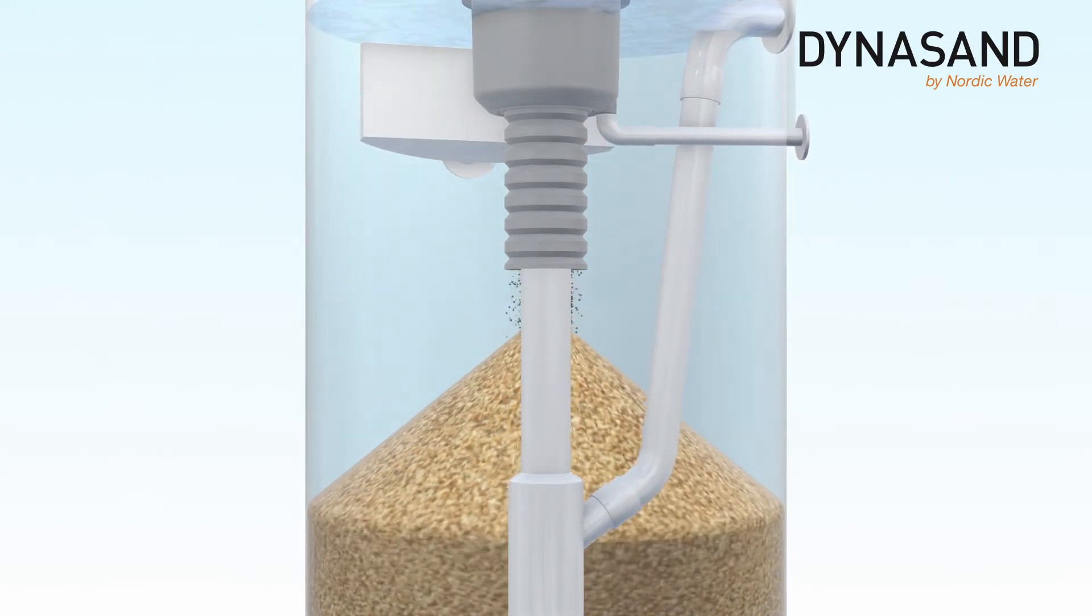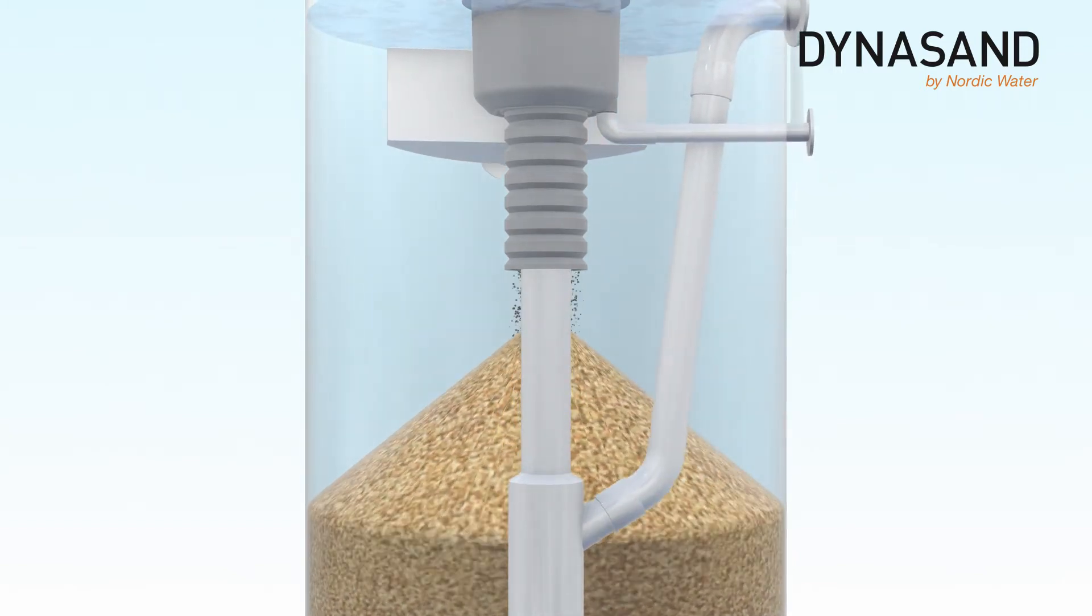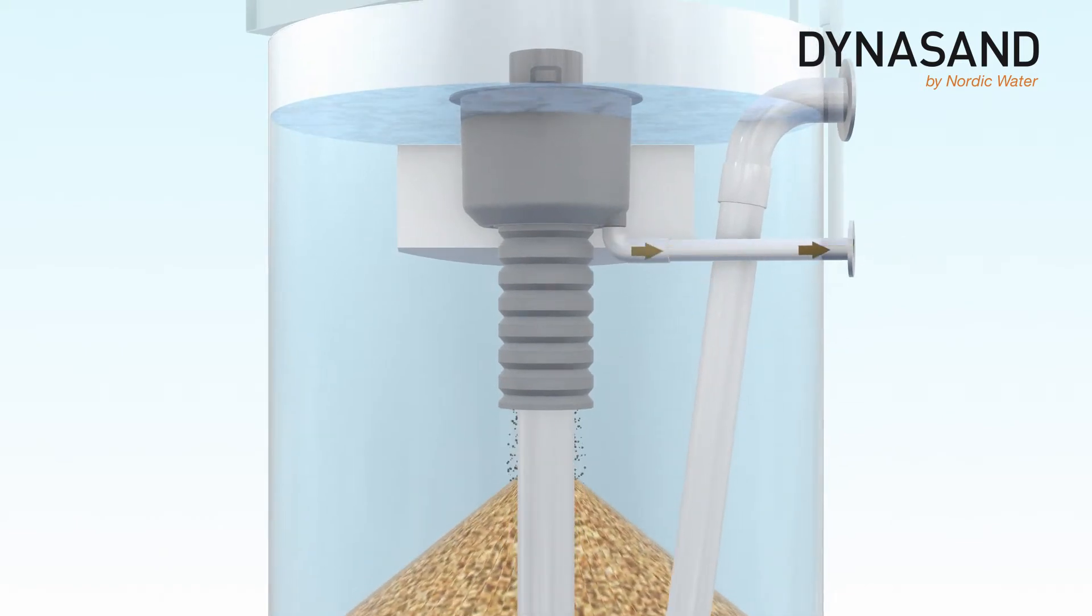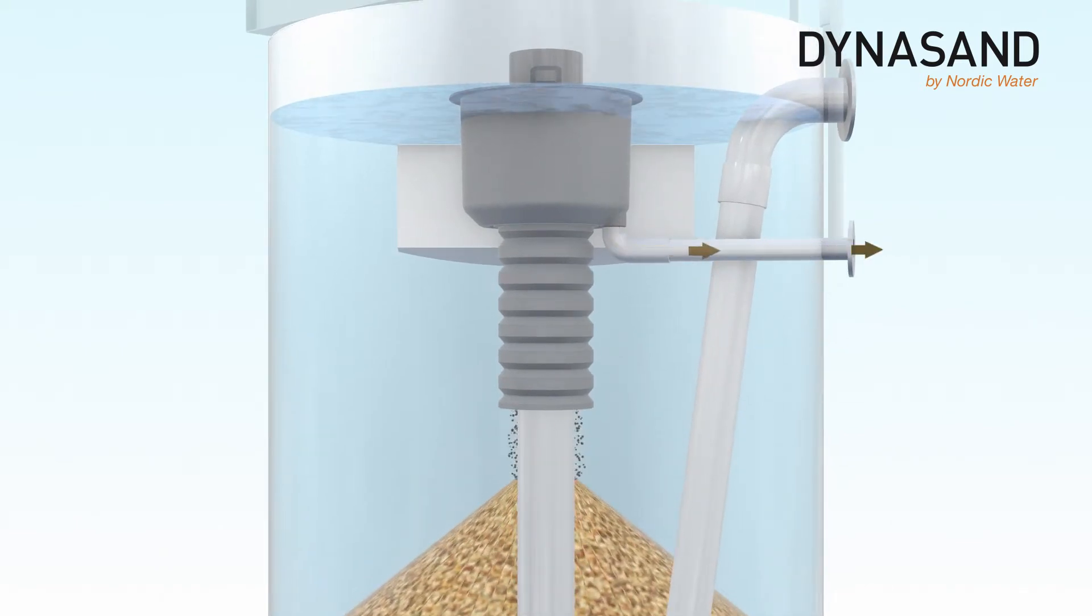The clean filter media falls down into the filter bed surface for continued use. The dirty wash water is discharged through the wash water outlet pipe.